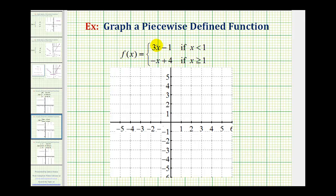Welcome to an example on how to graph a piecewise defined function. Notice our piecewise function has two function rules, which means graphically we can expect two pieces. f of x equals three x minus one if x is less than one, and f of x equals negative x plus four if x is greater than or equal to one.